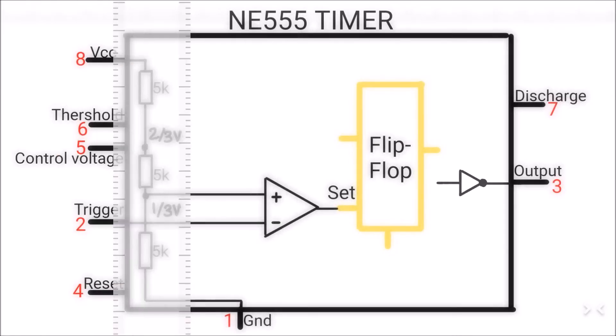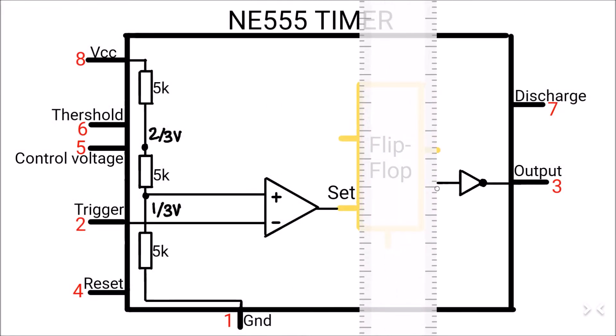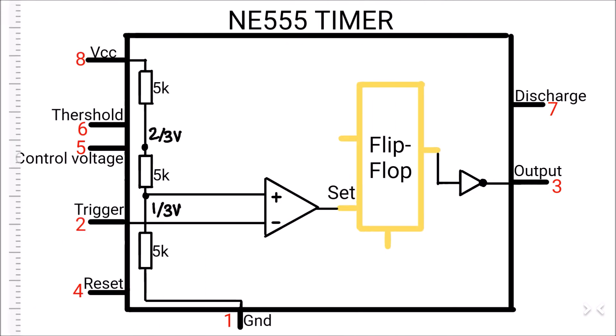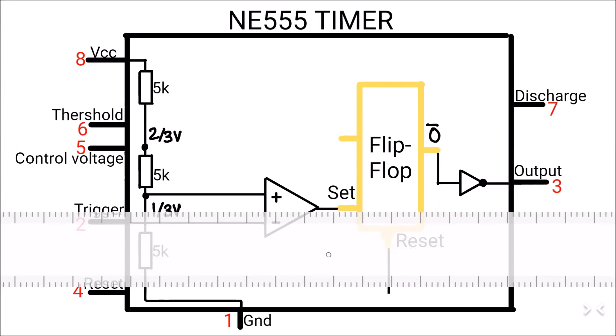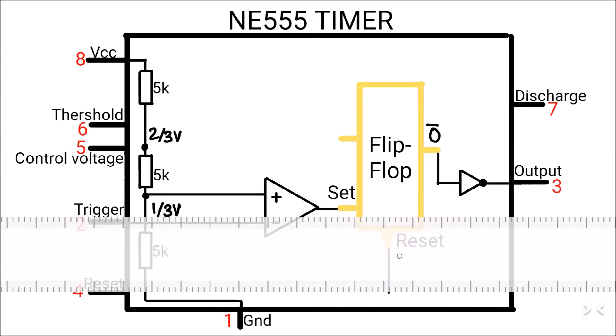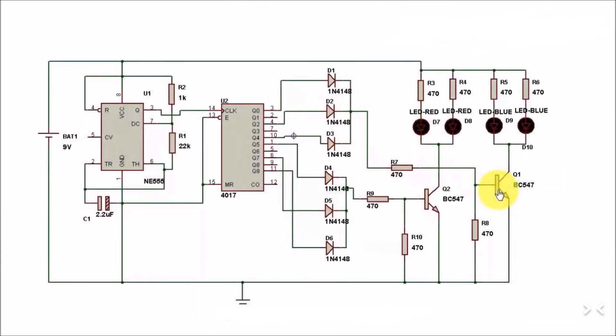Pin three is the output pin, which is connected to the output of the flip-flop by using an inverter, because the output of the flip-flop is inverted. Pin number 4 is the reset pin, which I already told you that by connecting it to the ground immediately resets the flip-flop. That is why in many circuits, it is usually connected to the VCC.